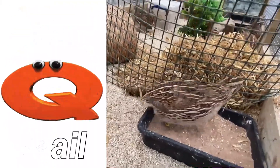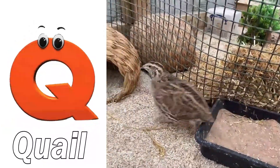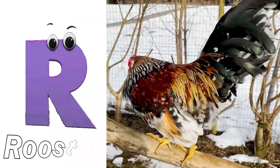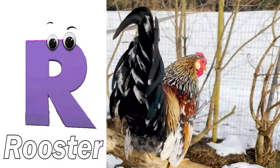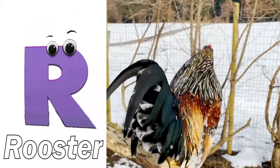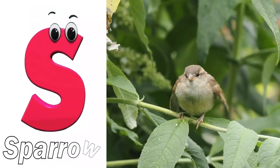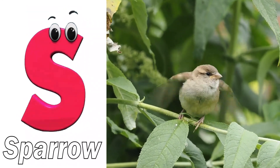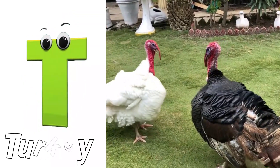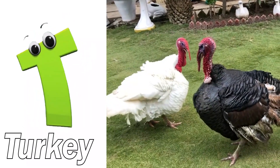Q is for quail, quuh, quail. R is for rooster, rr, rooster. S is for sparrow, suh, sparrow. T is for turkey, tuh, turkey.